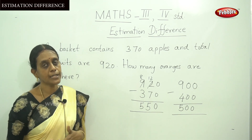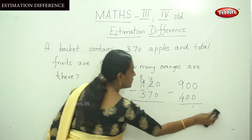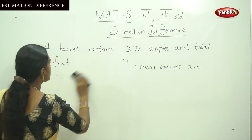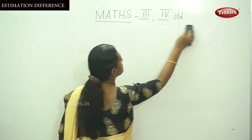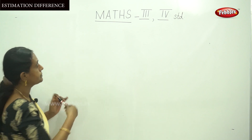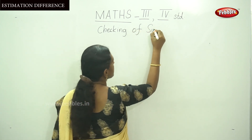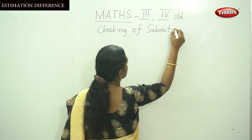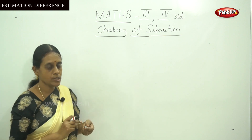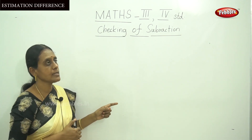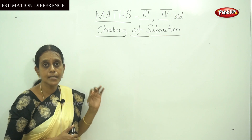By adding the difference and the subtrahend, you can get the minuend. As we learnt in the properties of subtraction, we can calculate the minuend value by adding the difference and the subtrahend. This is the technique to check whether our subtraction is right or wrong.